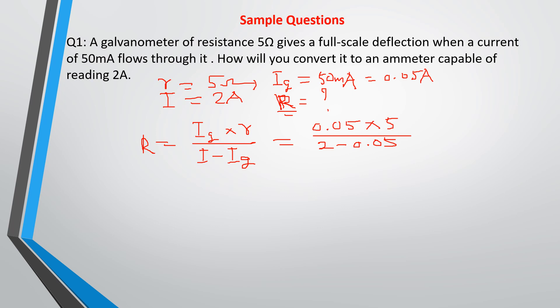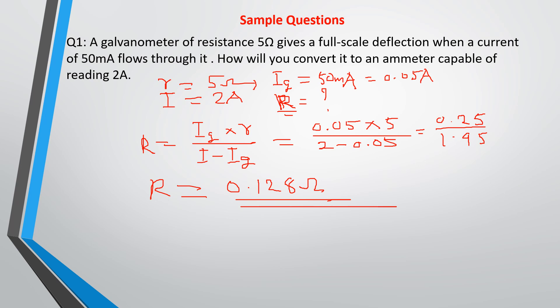Applying the formula: R_s = (I_g × R_g) / (I − I_g) = (0.05 × 5) / (2 − 0.05) = 0.25 / 1.95. This gives a shunt resistance that is very low — even lower than the resistance of the galvanometer. This confirms that the shunt is indeed a low resistance resistor, which is consistent with our definition.